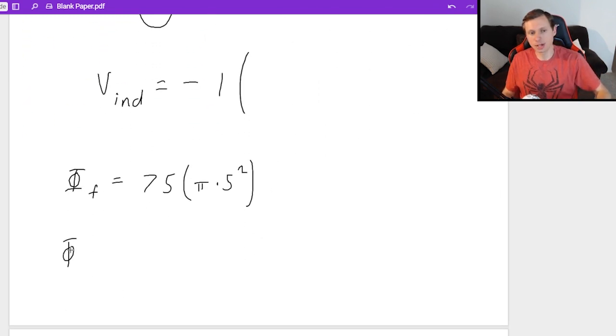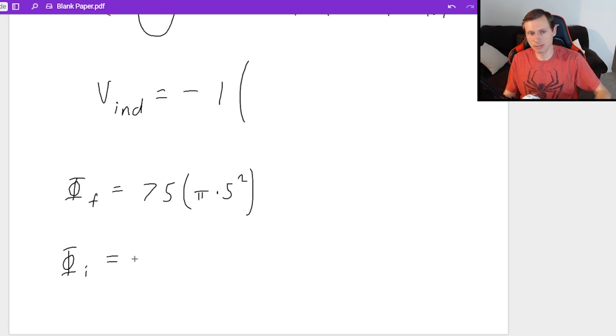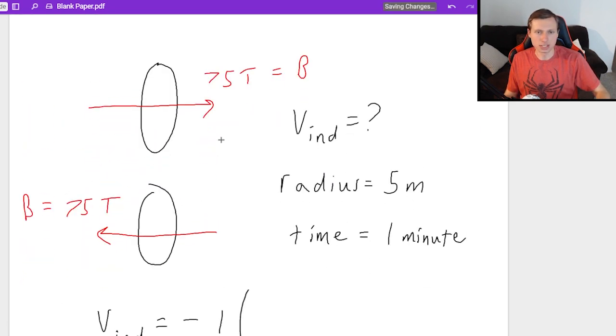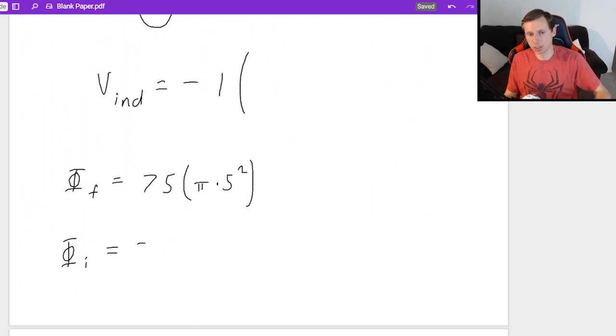And then if I think of flux initial, I'm pretty sure it's the same thing. Magnetic field is 75. Area didn't change. So it's 75 times pi times five squared. And if you think about this, isn't this just going to be zero? Yes, right now it's going to be zero because it's 75 times this minus 75 times that. It's just going to cancel. And of course, that just doesn't sound right. Some red flags are going off in our head right now. And that's because this is wrong.